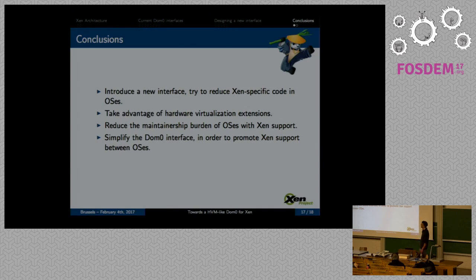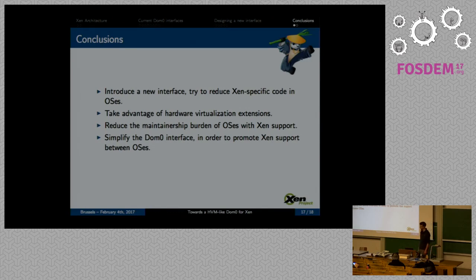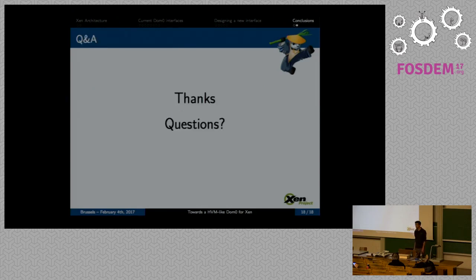We'll also be able to take advantage of all the hardware virtualization extensions on the market, taking advantage of all the newer hardware. We'll also simplify the DOM0 interface significantly, which means we can expect new OSes to add support for running on top of Xen even as a DOM0, because the interface is going to be very similar to bare metal. We expect that someone may implement new DOM0s in the future.